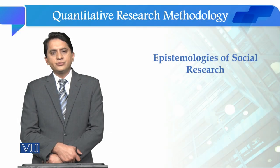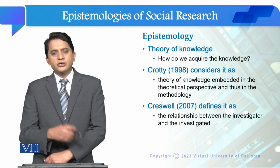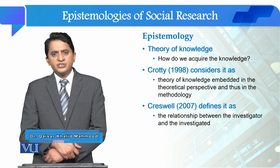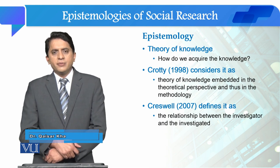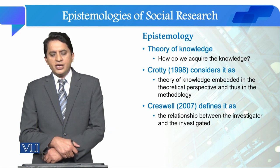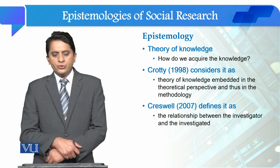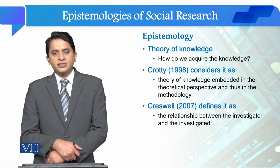Students, now we are going to study the epistemologies of social research. In the previous lecture, we talked about ontological beliefs in social research, and now we are going to see what epistemology is and what kind of epistemologies exist in social research. Epistemology is also called the theory of knowledge, and in this we try to answer the research question: how do we acquire knowledge? Crotty considers it as the theory of knowledge embedded in the theoretical perspective and thus in the methodology.